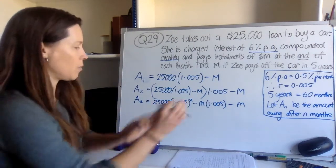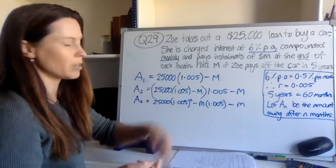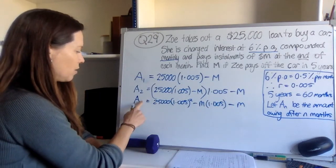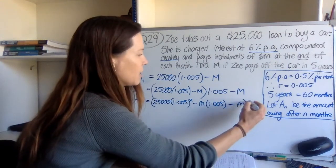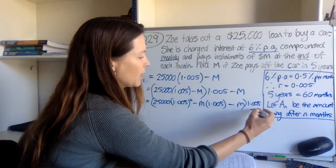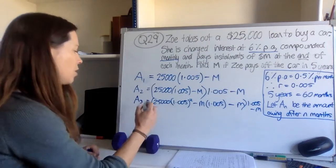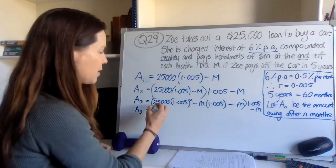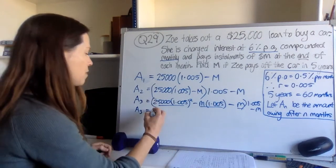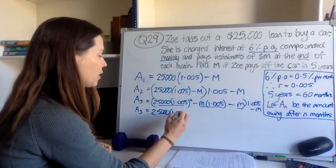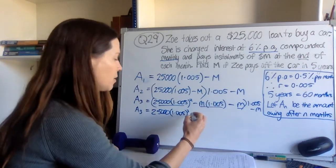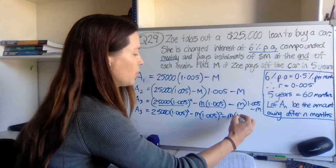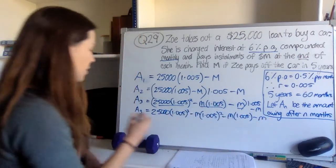For the end of the third month, I want to take all of a_2, raise it with interest, and then subtract M. So I'll take this version of a_2, call it a_3, raise it to interest straight away, then subtract M. Let's expand the brackets again — this is going to be a better version of a_3. I need to multiply 1.005 by each part. So when I multiply by the first part, it's going to be 1.005 cubed. This won't be raised to the power of 1, it will be raised to the power of 2, and then minus M × 1.005, minus M. So that's a better version of a_3.